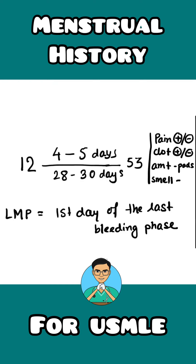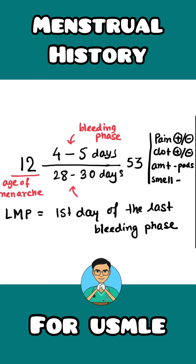So to summarize: we write the age of menarche, the duration of the bleeding phase, the duration or frequency of the menstrual cycle, the age of menopause, then pain, clot, amount, and smell, and finally the last menstrual period — that is the first day of the last bleeding phase she experienced.